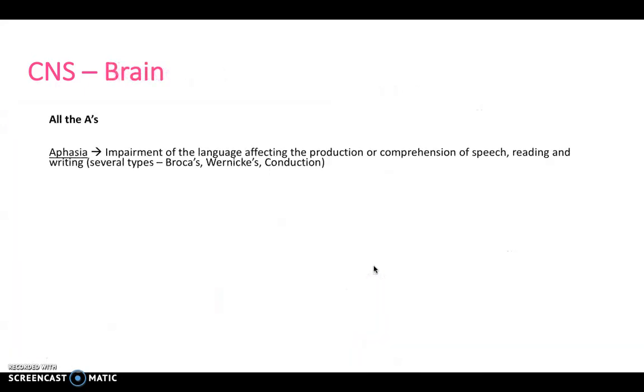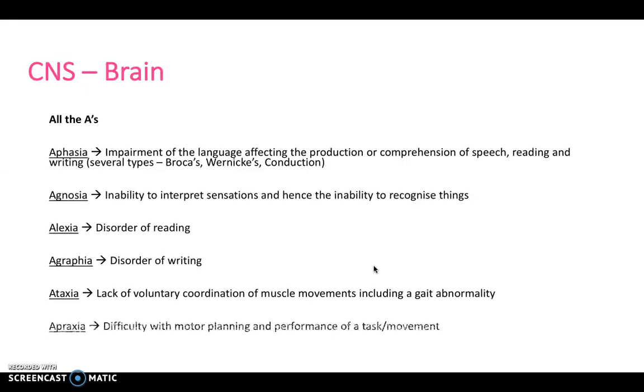In terms of the brain, a lot of things that can go wrong begin with A: aphasia, agnosia, alexia, agraphia, ataxia, and apraxia. Impairment of language is aphasia. Inability to interpret sensations and recognize things is agnosia. Alexia is disorder of reading. Agraphia is disorder of writing. Ataxia is lack of voluntary coordination of muscle movements, and apraxia is difficulty with motor planning and performance.